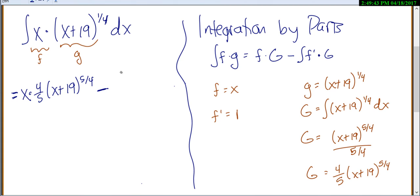And then we're going to minus, and it's going to be the integral of the derivative of f, which is 1. This is why we like integration by parts, because we went from an x, which is complicated, to just a nice little 1, times the capital G, which is 4/5 (x plus 19) to the 5/4.